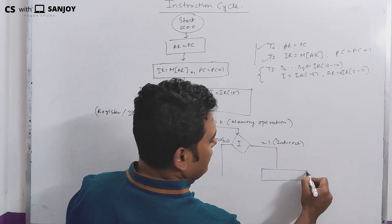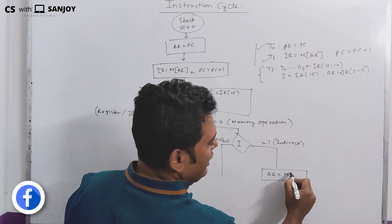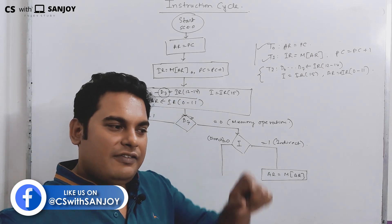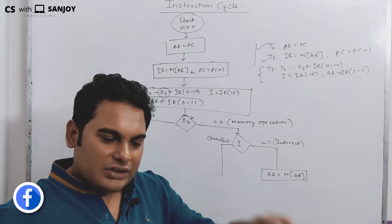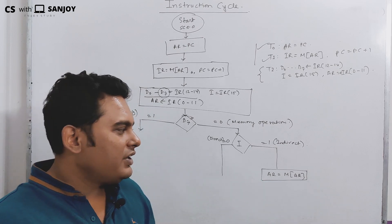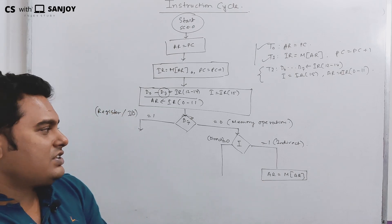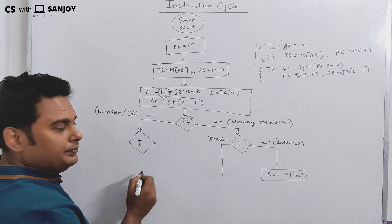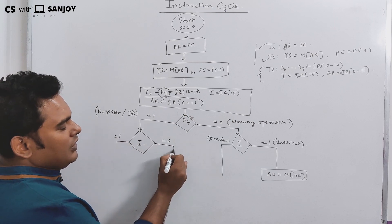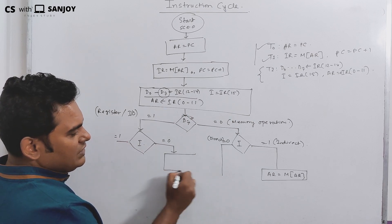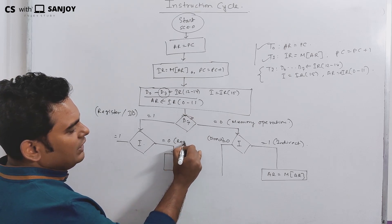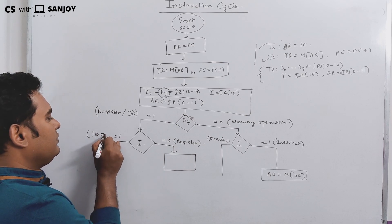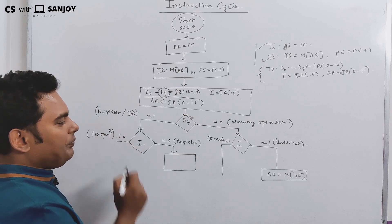Now it is time to read the operand address. We check the I bit — the addressing mode. If I equals 0, it is direct addressing — nothing extra needed. If I equals 1, it is indirect addressing: AR equals M[AR], meaning we fetch the effective address from memory to get the actual operand address.